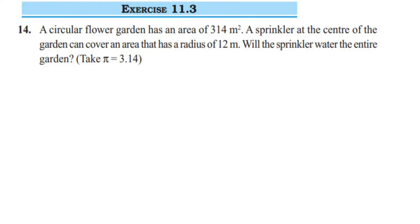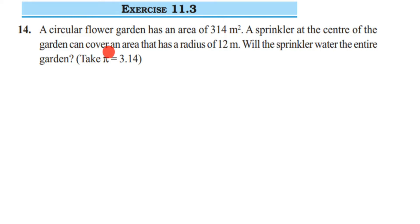Hey everyone, here I am doing exercise 11.3, question 14. This is from the Perimeter and Area chapter of class 7. The question is: a circular flower garden has an area of 314 square meters. A sprinkler at the center of the garden can cover an area that has a radius of 12 meters. Will the sprinkler water the entire garden?